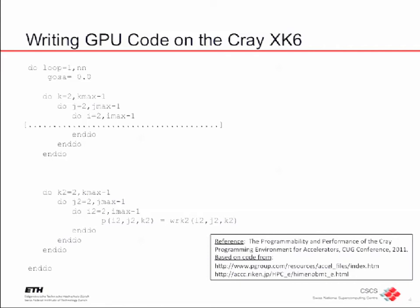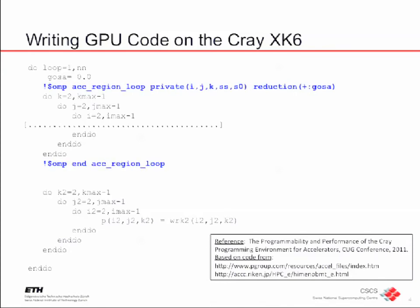Here is my sales pitch. One of my colleagues, Jeff Poznanovic, took a PGI version of a CFD code and converted it into the Cray programming environment. You can see it's nothing unusual looking, especially if you are used to looking at Fortran — and now it runs on GPU in the Cray environment. All you have to do is add the directives and it will run on GPU.